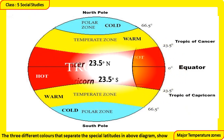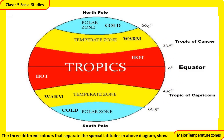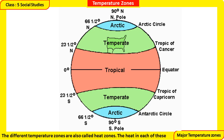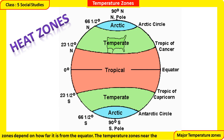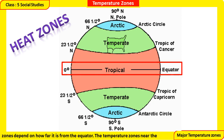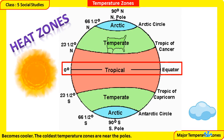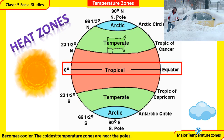The three different colors that separate the special latitudes in the diagram show the three different temperature zones of the earth. These temperature zones are also called heat zones. The heat in each zone depends on how far it is from the Equator. The zone near the Equator is the hottest. As we move away from the Equator, the zones become cooler, and the coldest zones are near the poles.